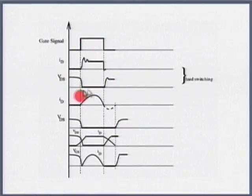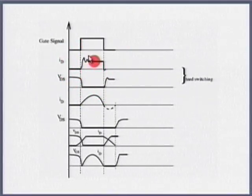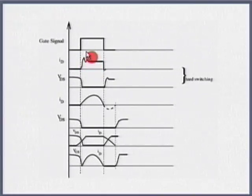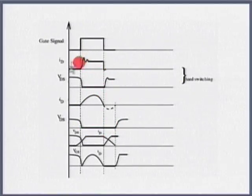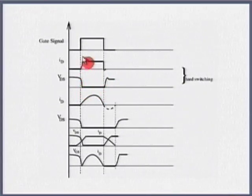I will just show you the waveforms here - see the ringing. I am applying the gate signal; this is the device current - see the ringing here. This is because of circuit parasitics and also because of diode recovery current, which flows in the opposite direction and has to flow through some device. The main switch may have to carry the diode recovery current. See the voltage across the device and see the spike here - the product is finite and see the rate of rise.